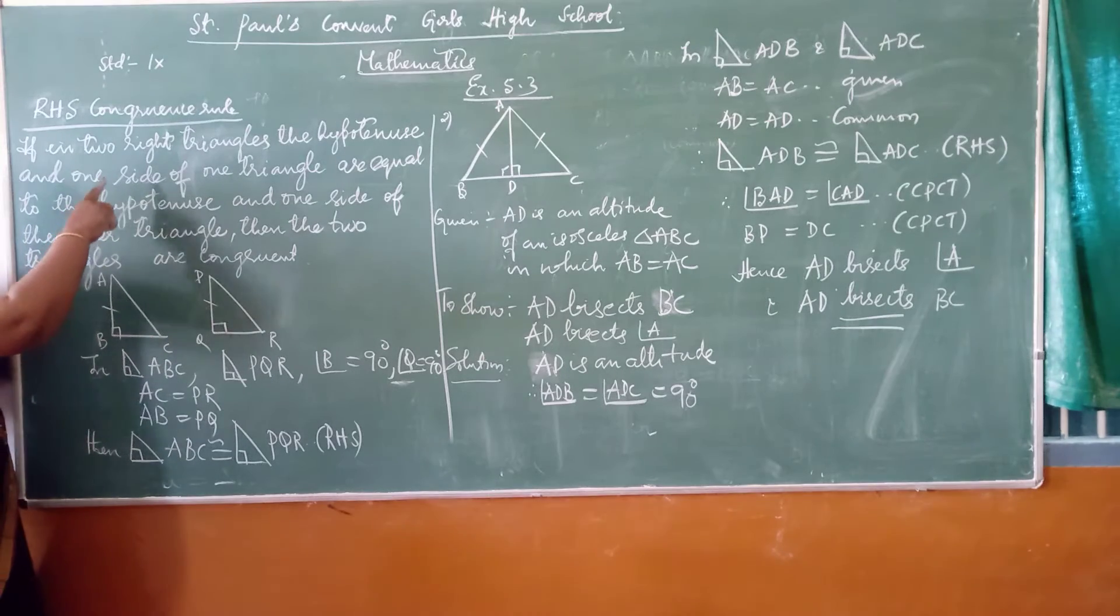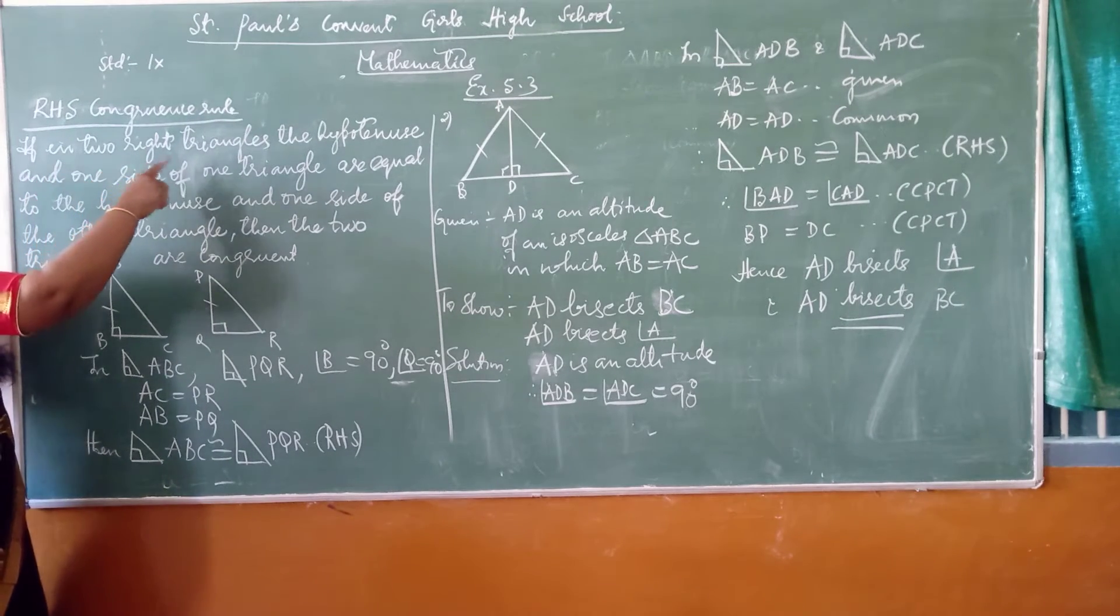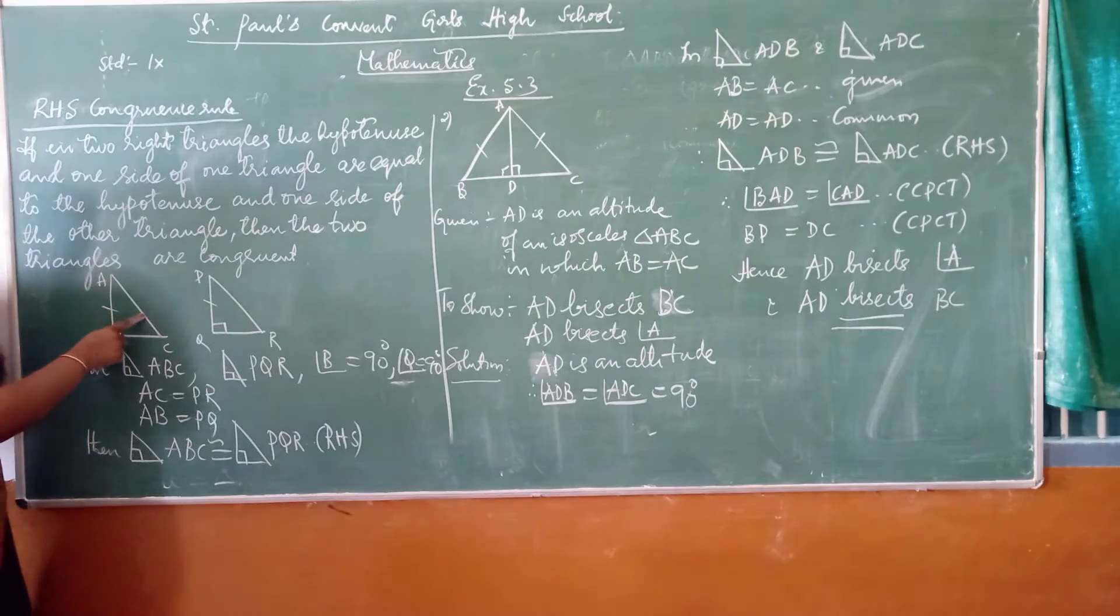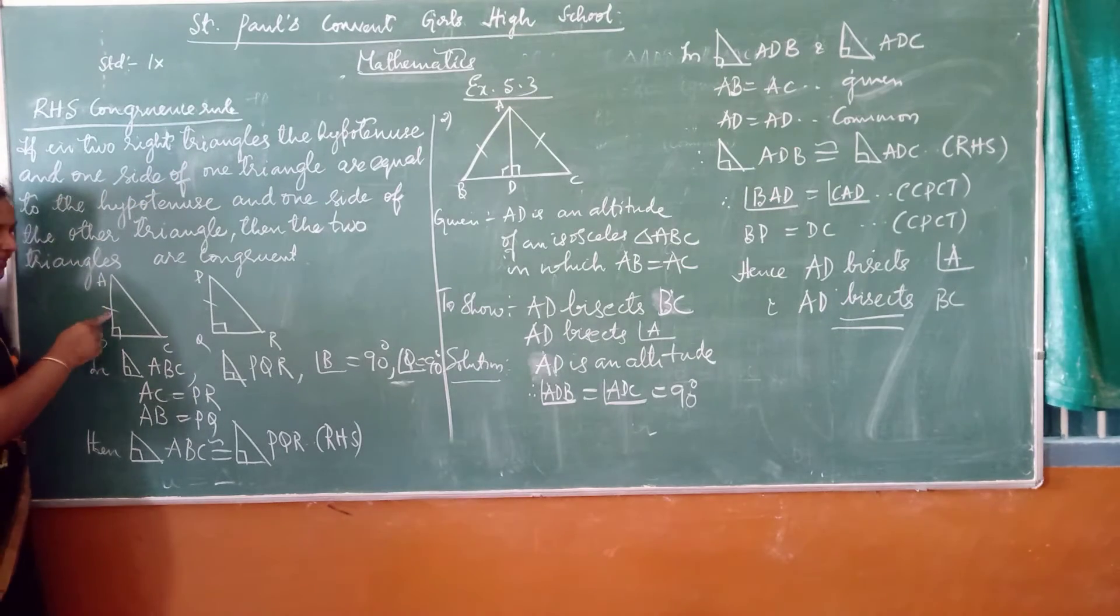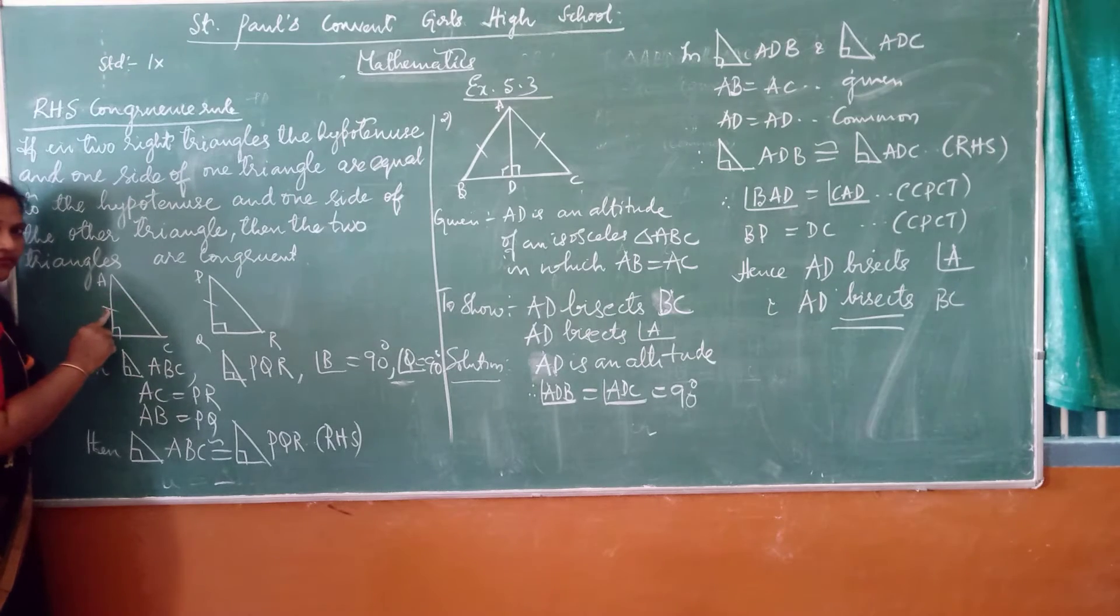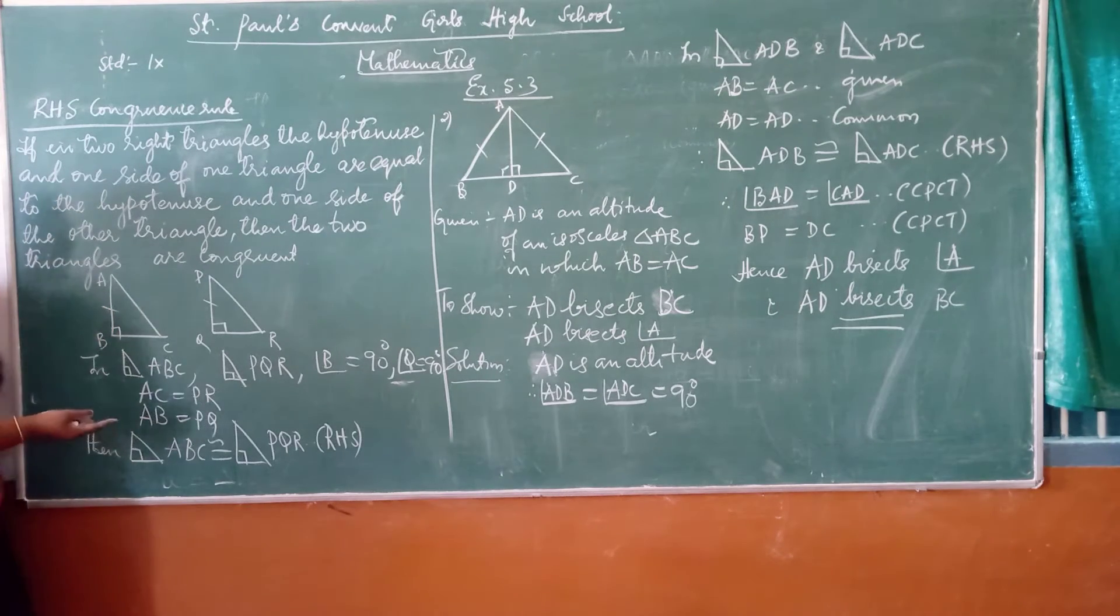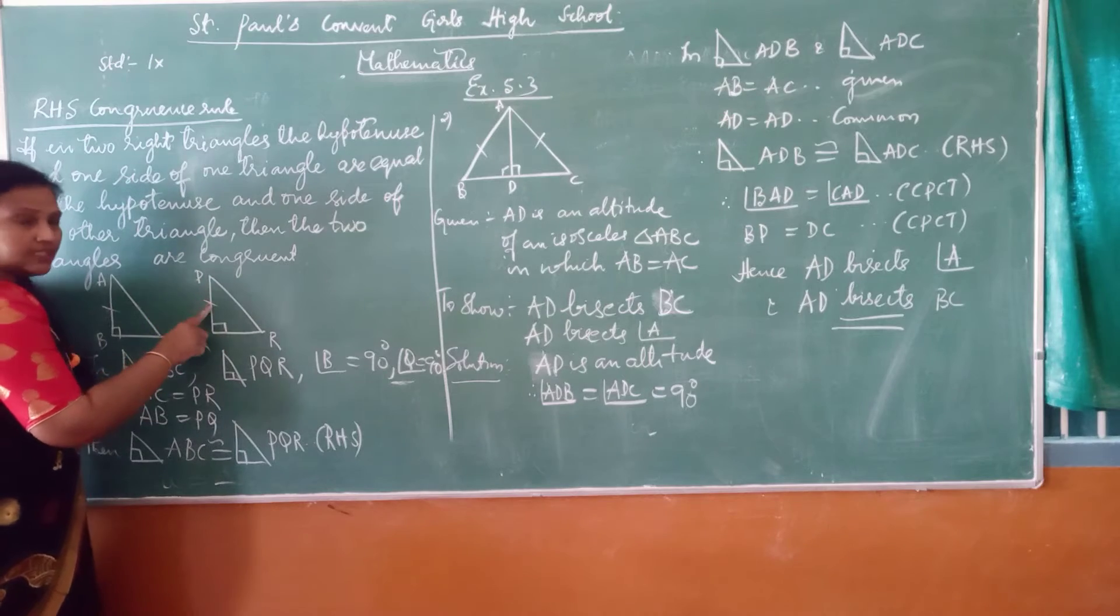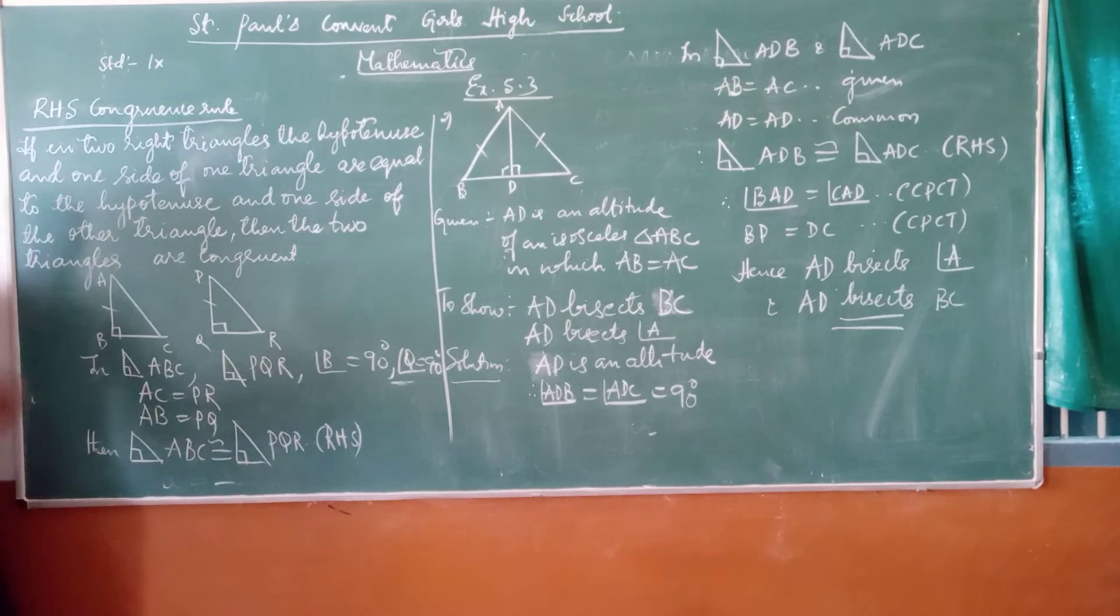So he says that if in two right triangles, the hypotenuse and one side of a triangle, either this side or this side, so the hypotenuse and one side of a triangle should be equal to the hypotenuse and the other side of a triangle, then the two triangles are congruent.